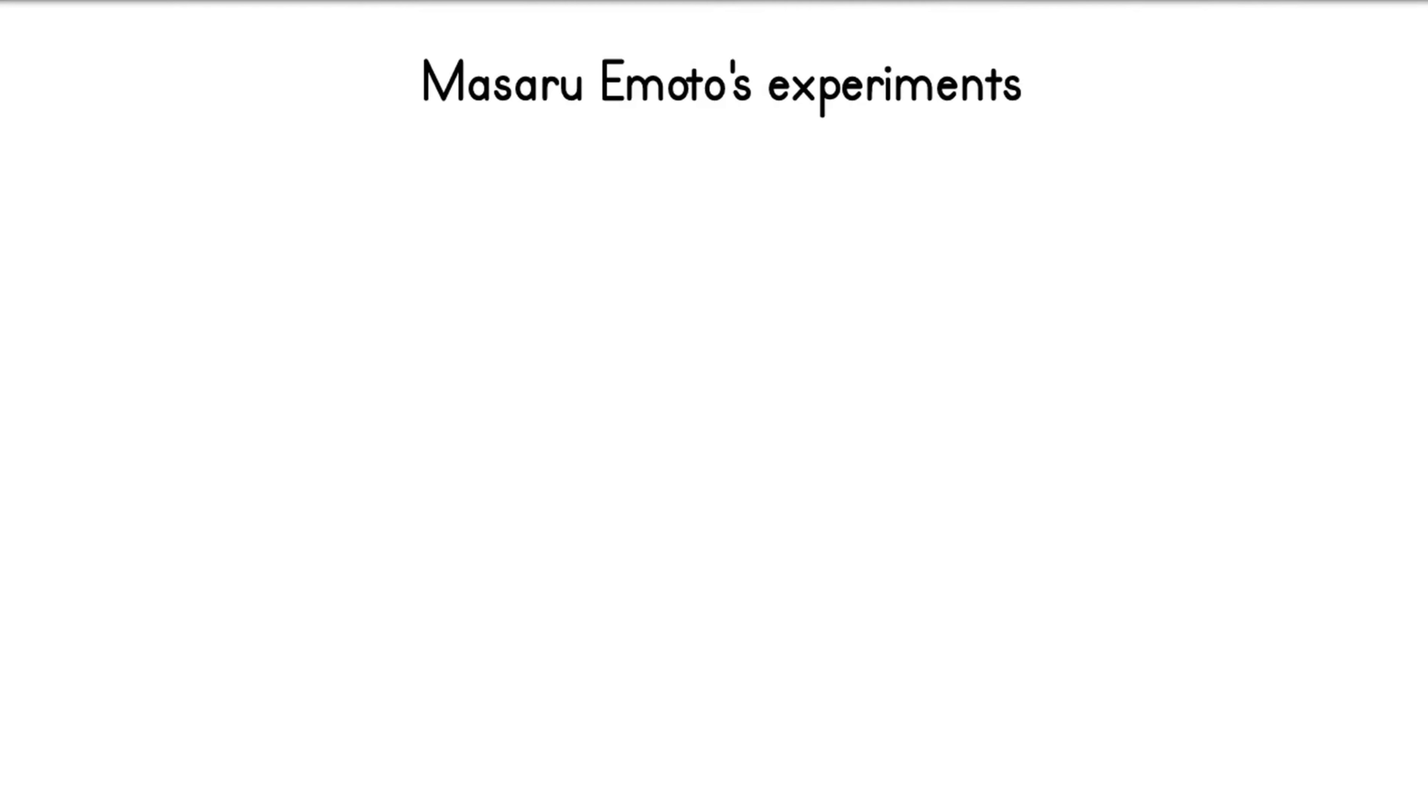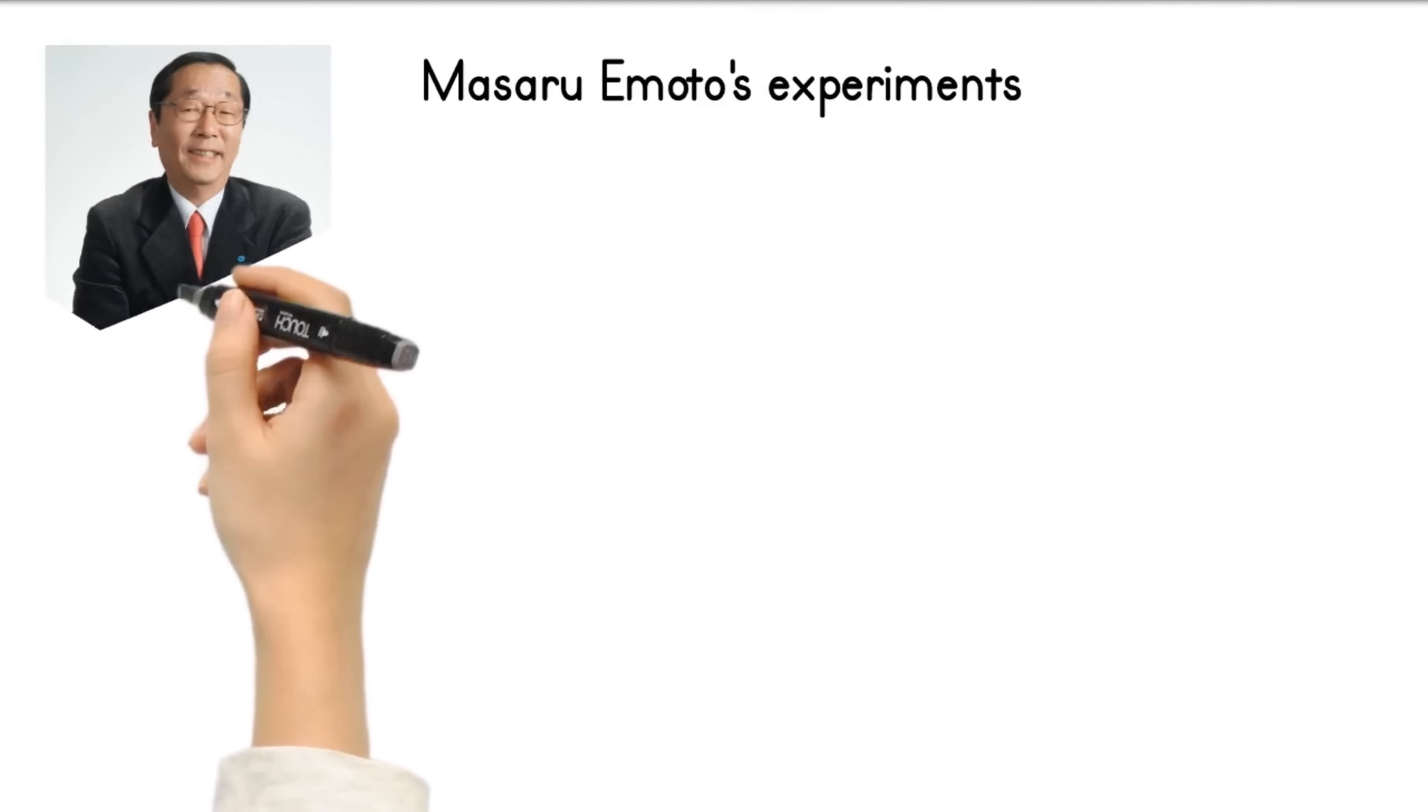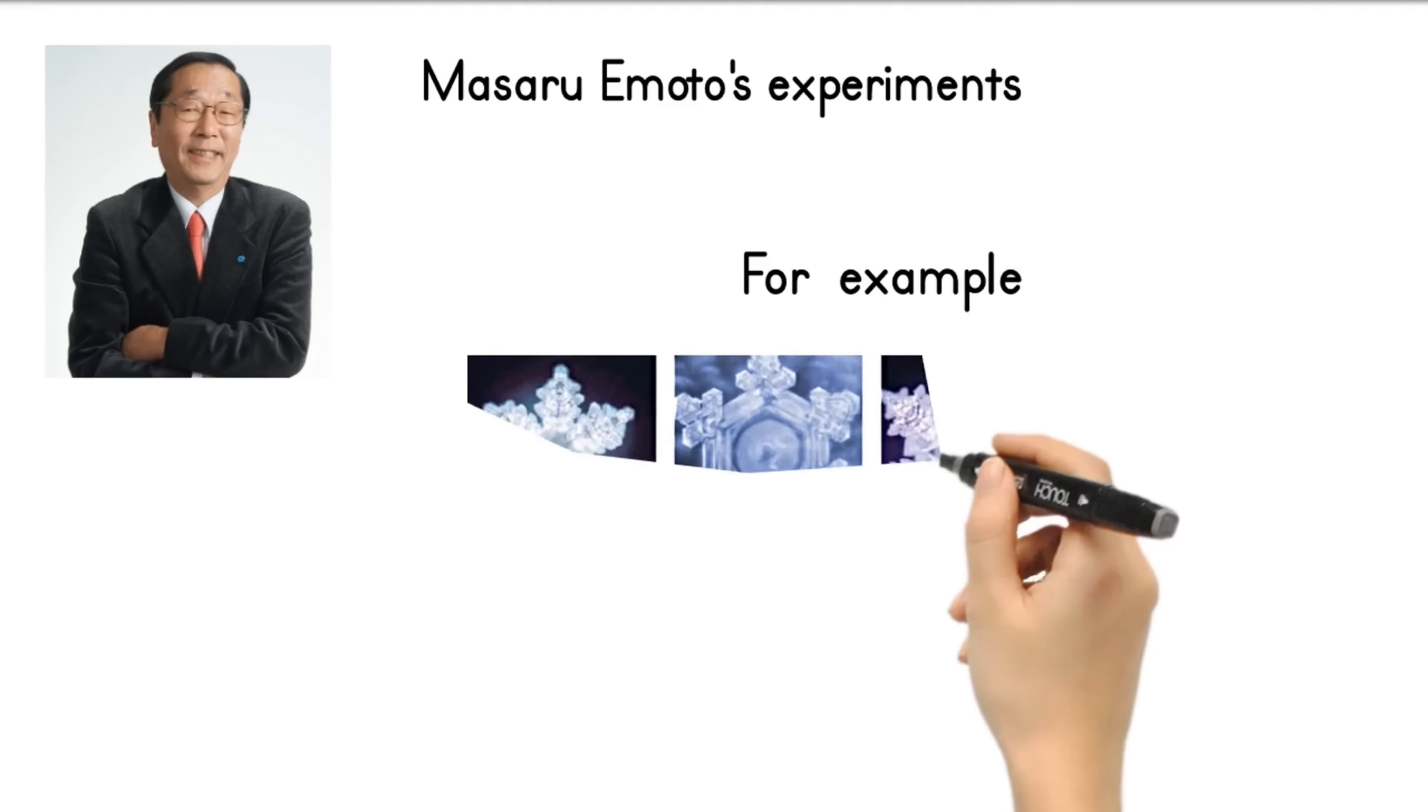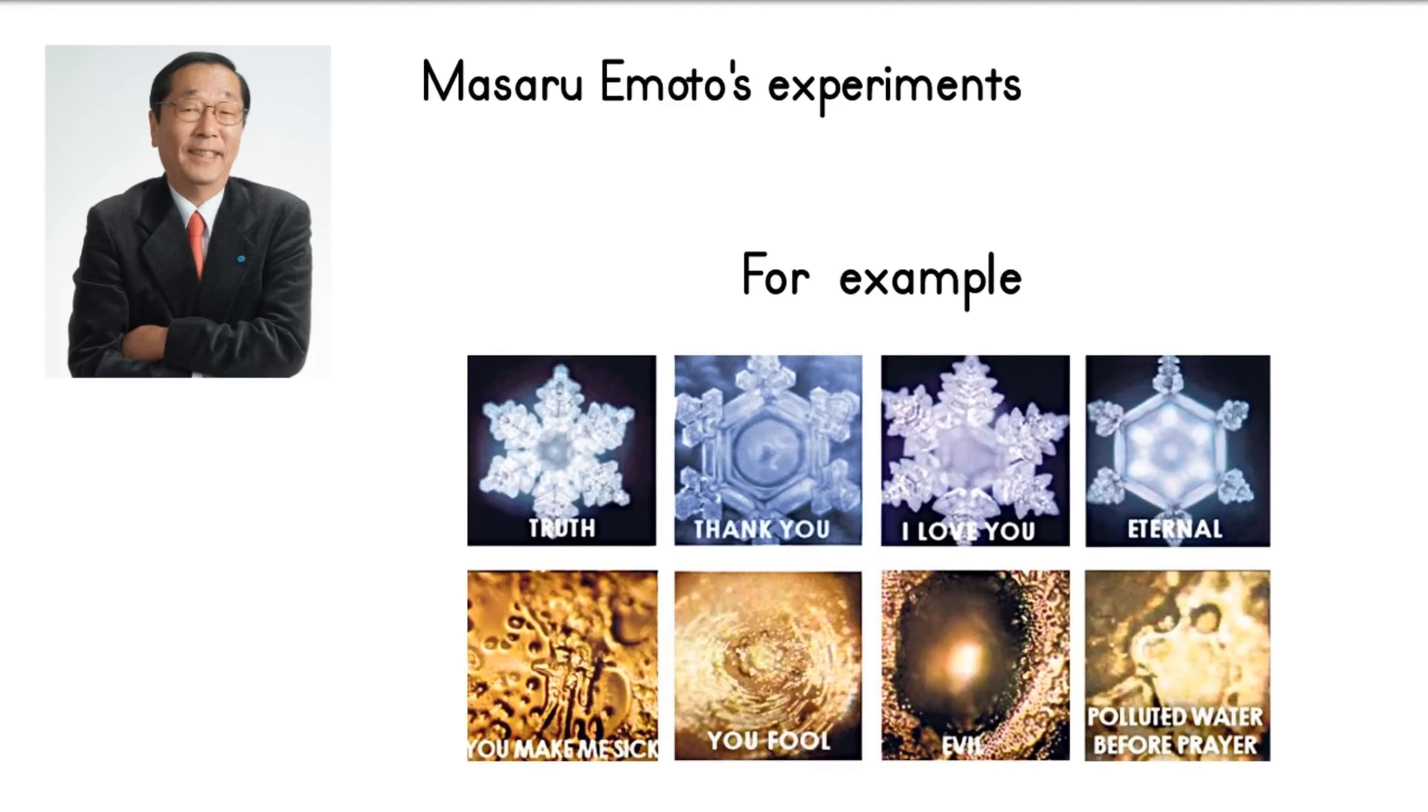Masaru Emoto's experiments in the 1990s showed that the energy generated by positive or negative words can change the physical structure of an object. For example, water that was free from impurities formed beautiful ice crystals that looked like snowflakes under a microscope. However, when polluted or labeled with negative phrases, the water no longer crystallized and yielded gray, misshapen clumps instead of beautiful lace-like crystals.